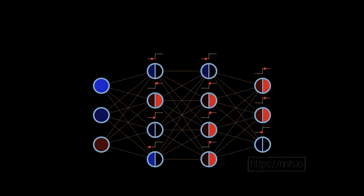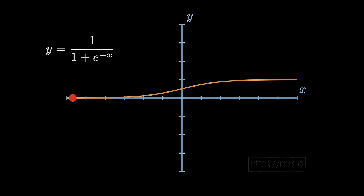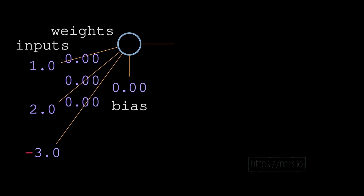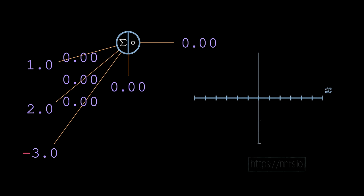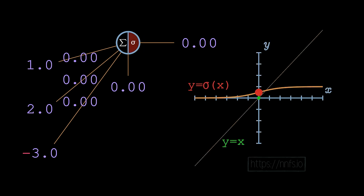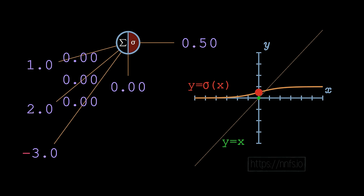This brings us to the sigmoid activation function. While you can use a step function, it quickly became obvious that sigmoid was easier and more reliable for training a neural network, due to the granularity of the output. Sigmoid comes in after inputs times weights plus bias, and unlike the step function, it gives a more granular output that becomes the input to the next layer.